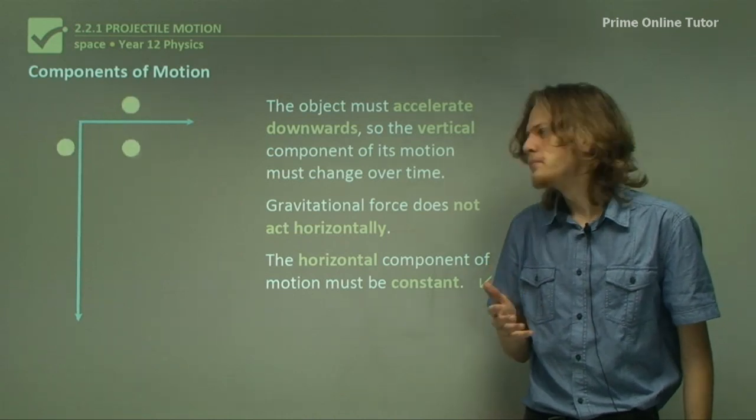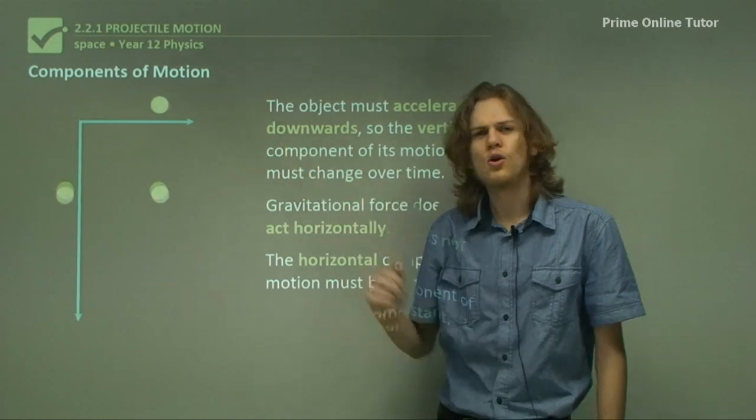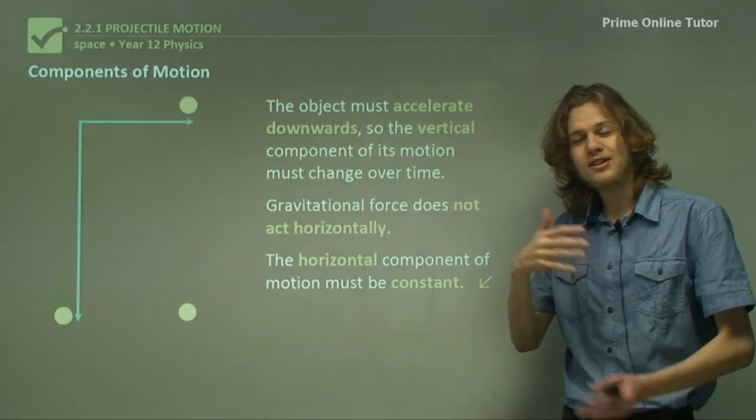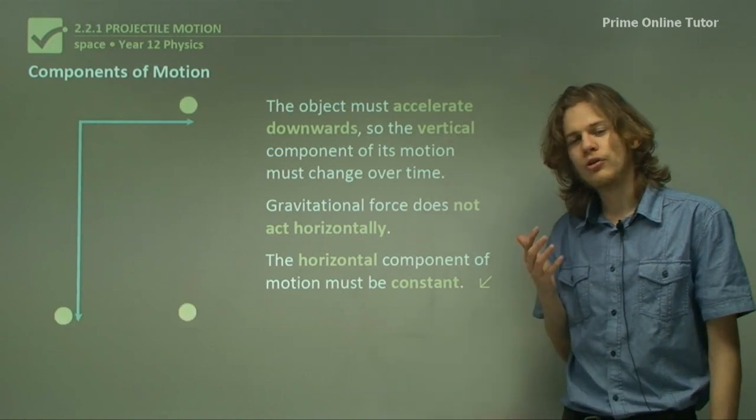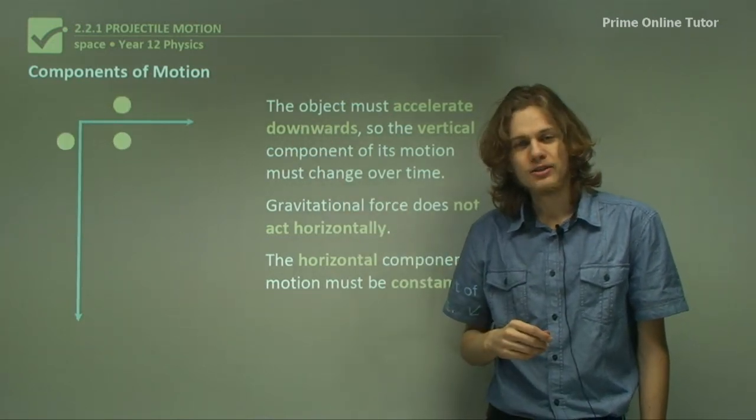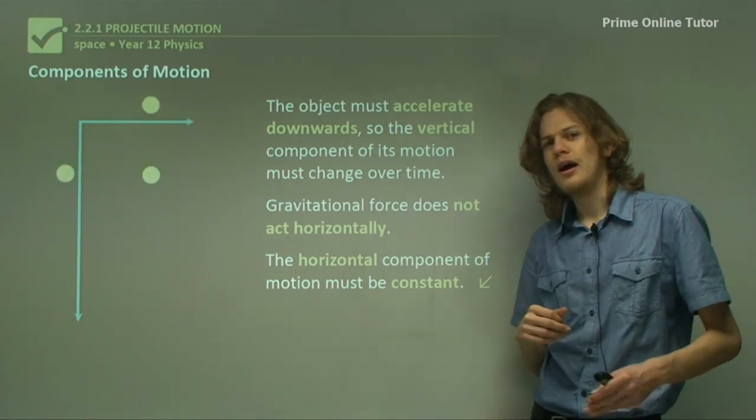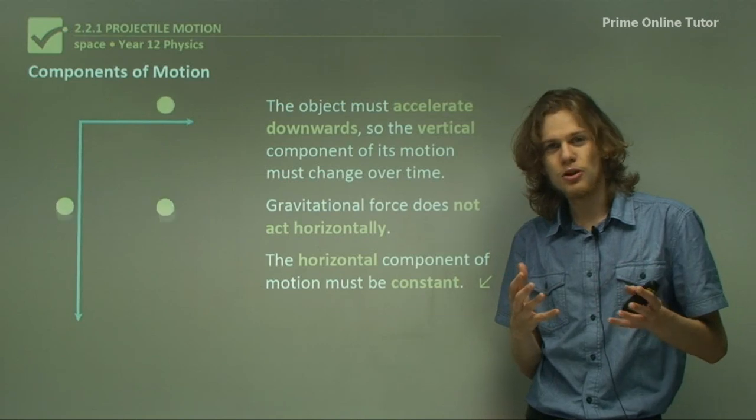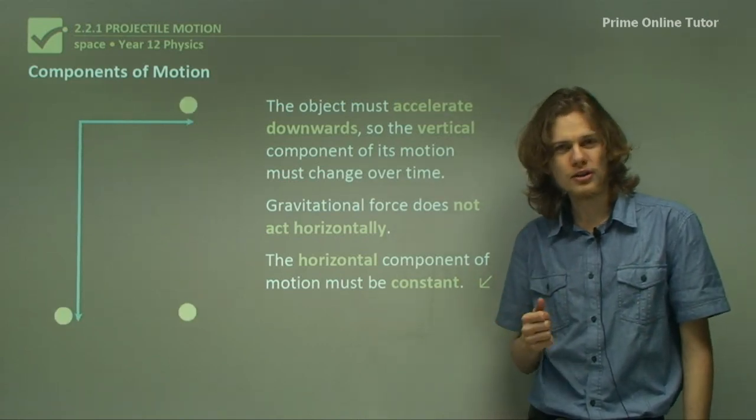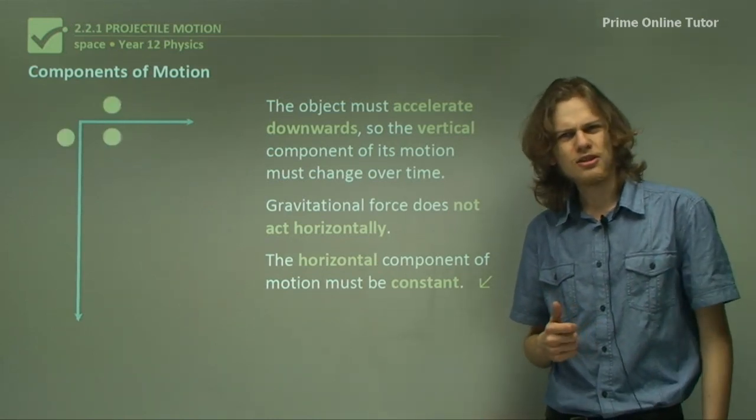For the purposes of the HSC, we won't worry about that. Horizontal motion is always constant. This is because if we have a force acting in a different direction, it will not affect that component of motion. So that's the end of the theory. In this section, we've learned about how to describe motion in terms of the components in the vertical and horizontal direction, and we've talked about how they can be affected by gravity. Let's go on to some questions.